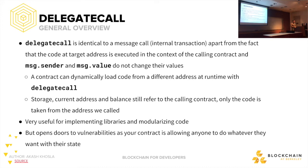Delegate call is identical to a message call, except the code at the target address is executed within the scope of the calling contract, and message.sender and message.value do not change their values. So when you delegate call to another contract, you take the current contract's context and move that into the function call of the other contract's function. That's where you execute all manipulations on state for the callee contract.